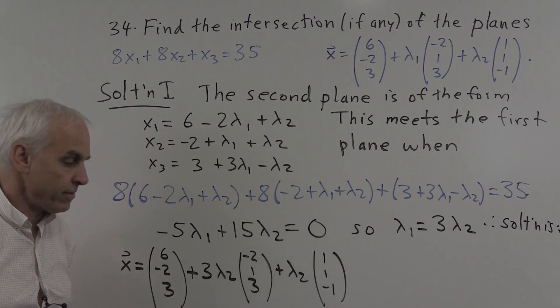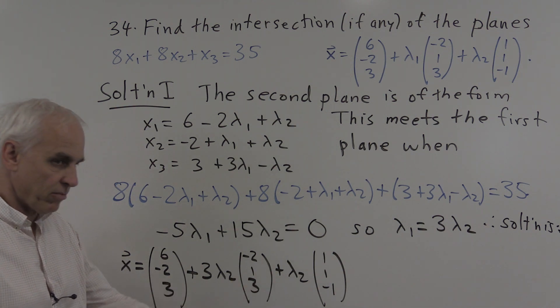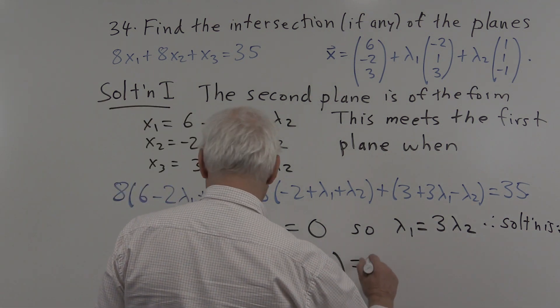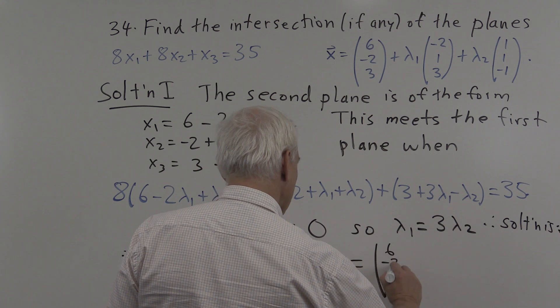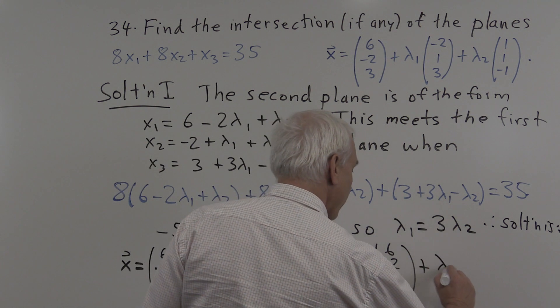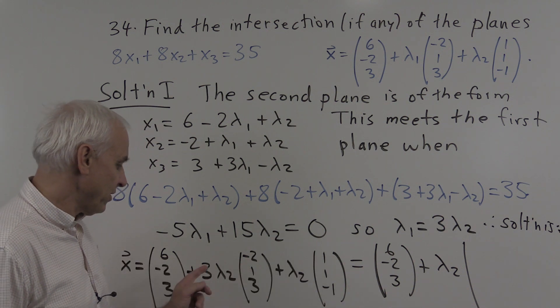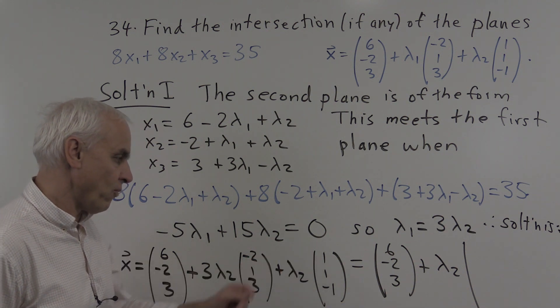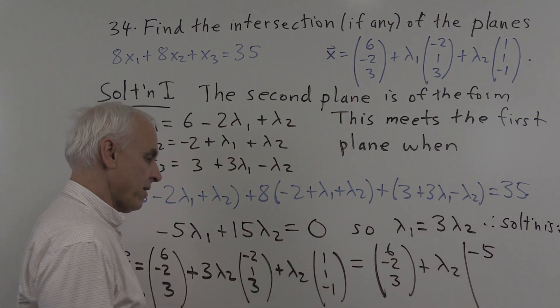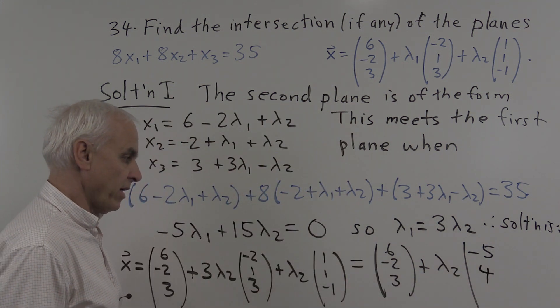Can I simplify that? Yeah, because the lambda 2 here is appearing in both these terms. So why don't we just pull that out? Then we can write it as 6 minus 2, 3 plus lambda 2 times, times what vector? Well, we should multiply this vector by 3 and add that vector. So 3 times minus 2 plus 1 will be minus 5. 3 times 1 plus 1 is 4. And 3 times 3 minus 1 is 8.